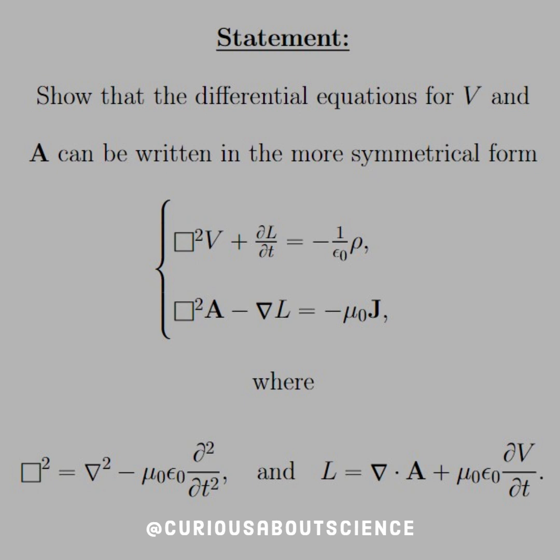So we're going to start there and then build a theory of potentials and fields forward. With that, our first question is: show that the differential equations for V and A can be written in a more symmetrical form with the box squared V plus DL DT equal negative 1 over epsilon naught rho, box squared A minus gradient L is equal to negative mu naught J.